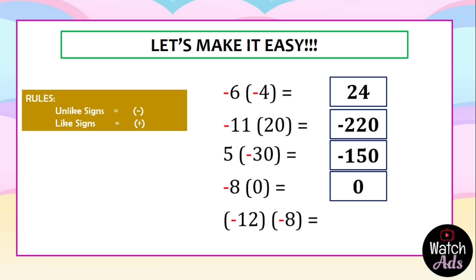For our last example: negative 12 multiplied by negative 8. They are both negatives, therefore the answer is positive. Multiply 12 and 8 — the answer is 96.